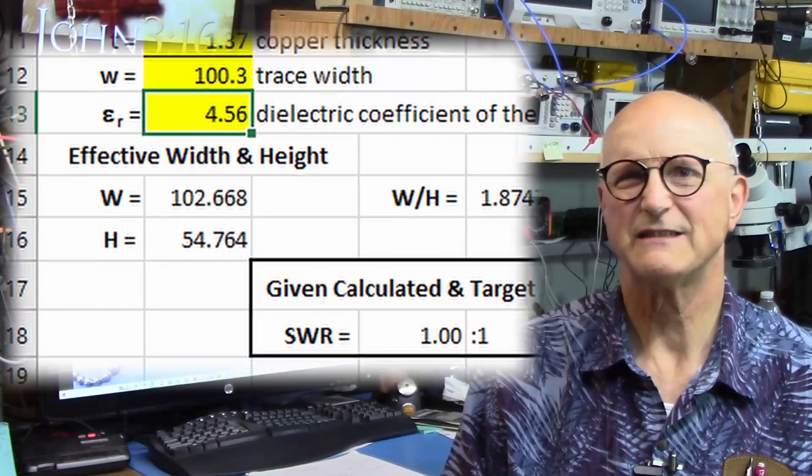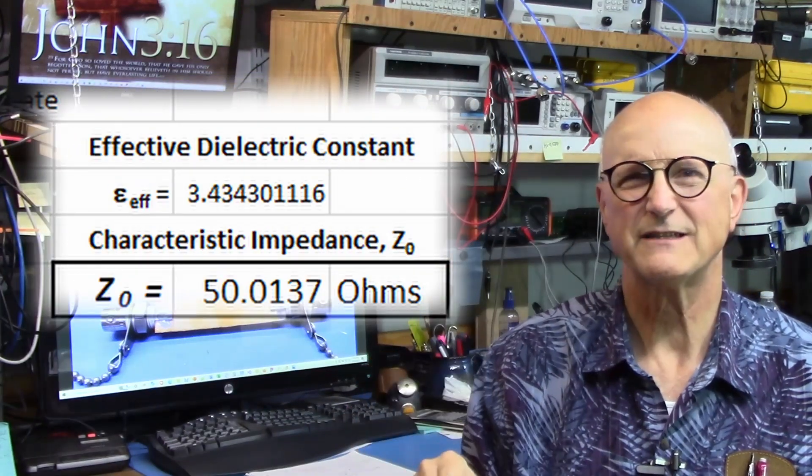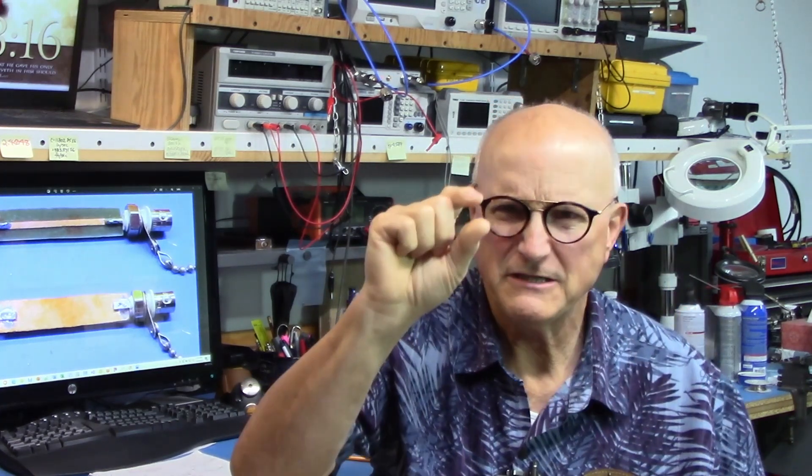In there you will see things like effective width and effective height and effective dielectric constant and we say, what, huh? Well, this is all electromagnetics and RF magic. There's just something about all of this that makes the width of the trace act like it's different than what it physically is and the thickness and the dielectric coefficient of the substrate act like it's different than it is. It's all a bunch of RF magic and weirdness. This is where we have to live by faith, put the numbers into the equations, and just accept the results.